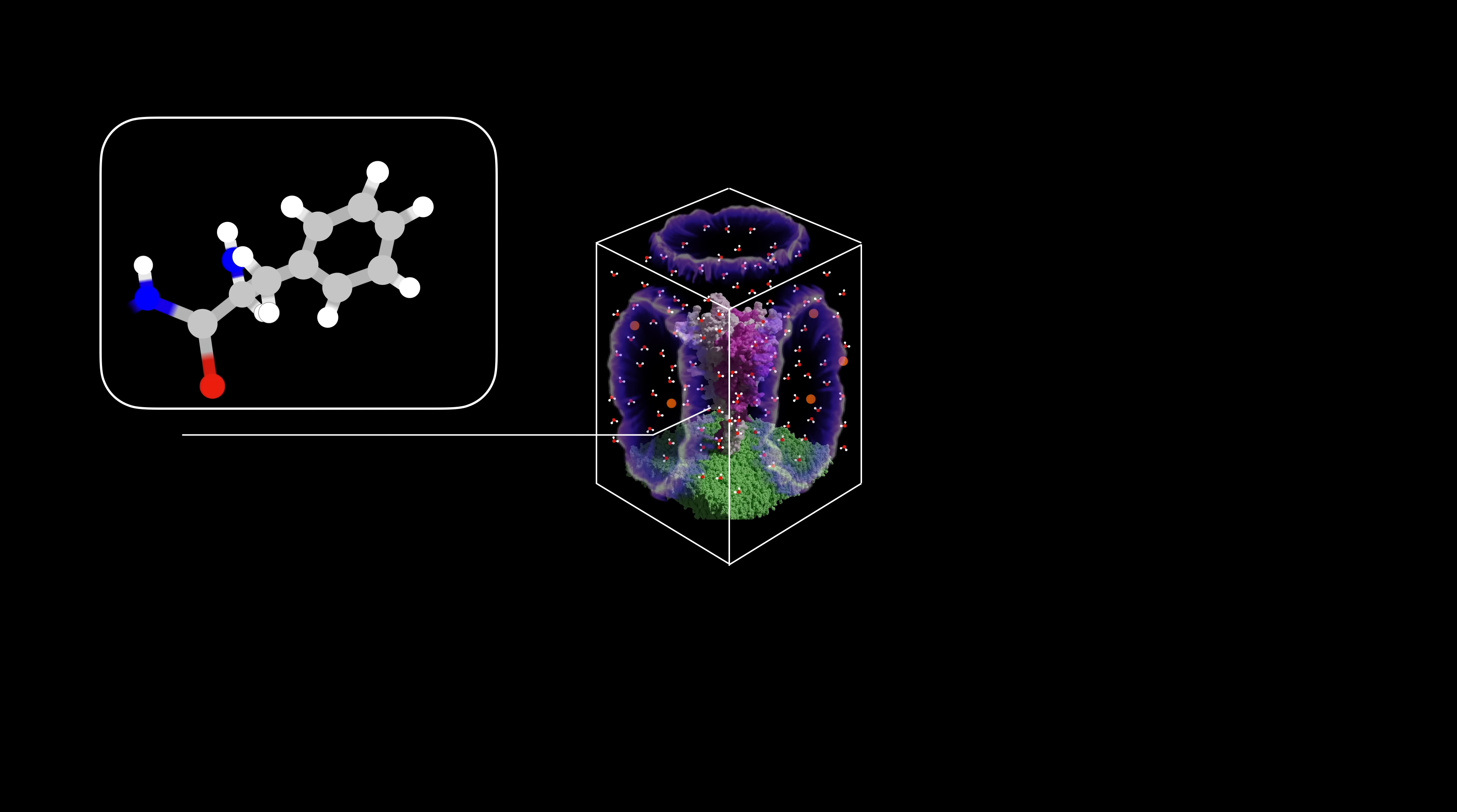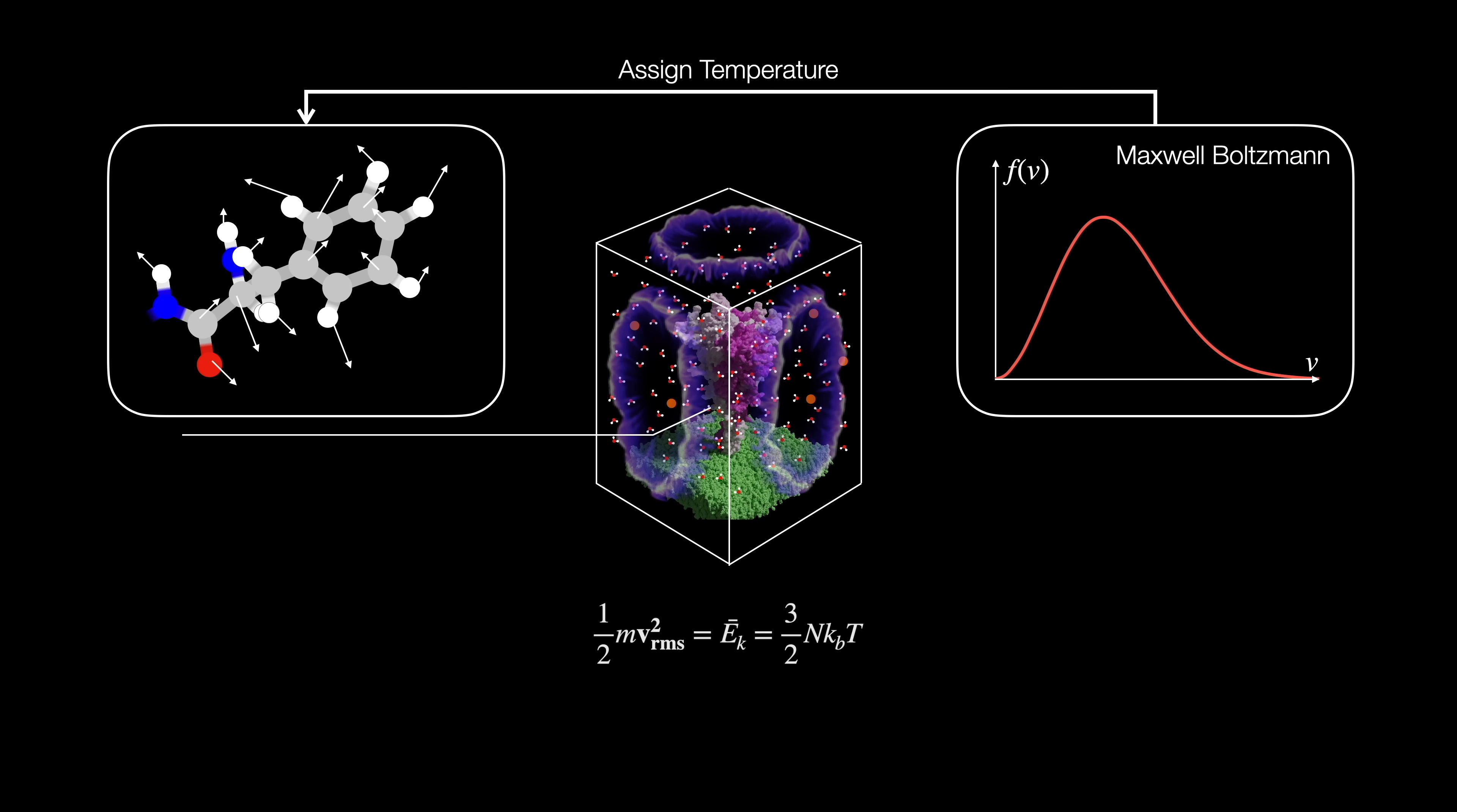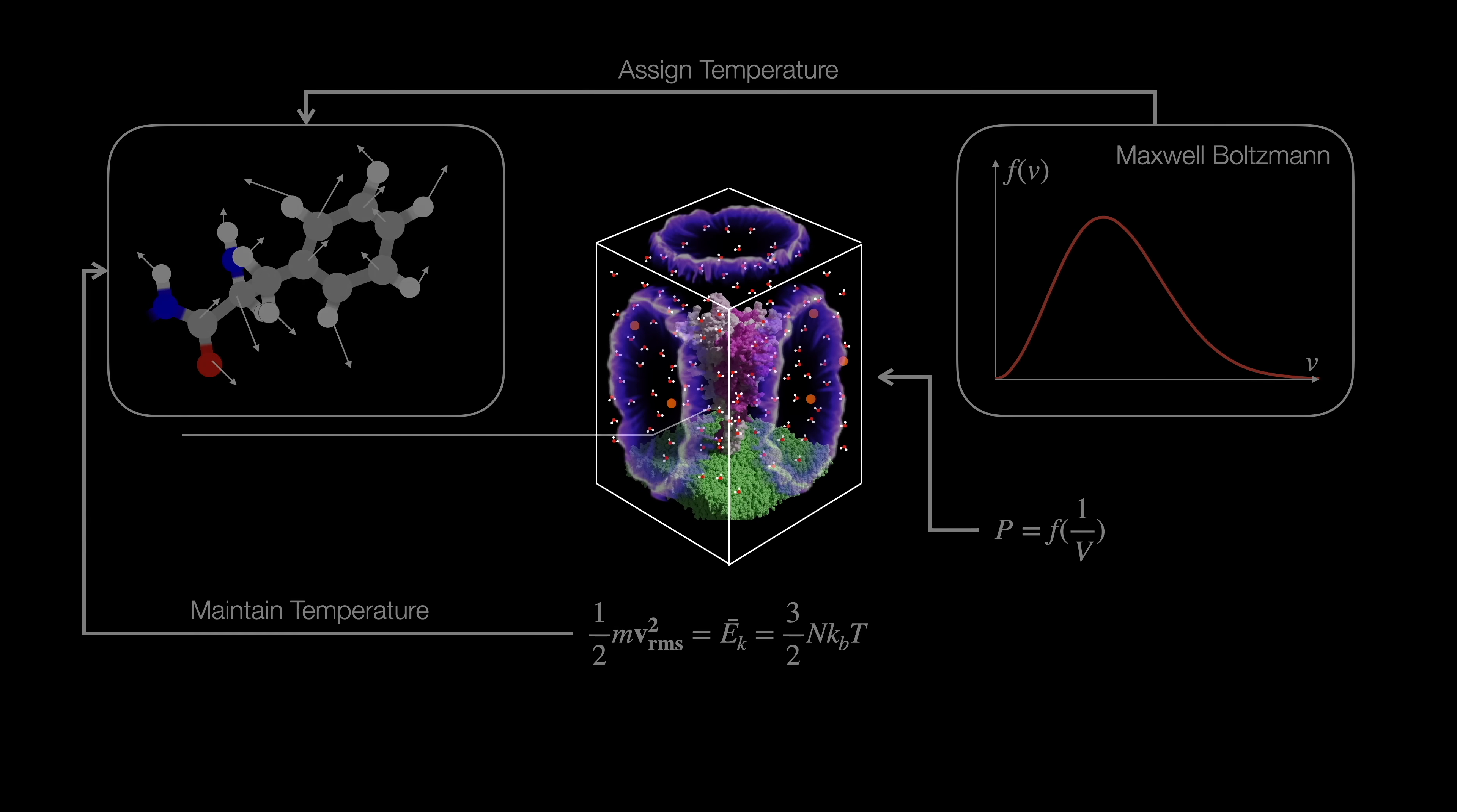Then we energetically relax the system. The unloaded stringy bonds inside our system can yank the whole structure in a very unrealistic way. Then we can bring the protein up to temperature and pressure, and we're ready.